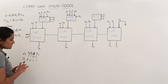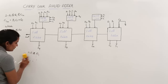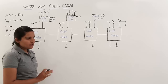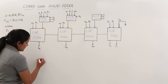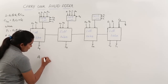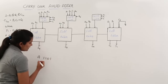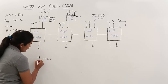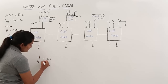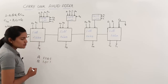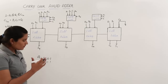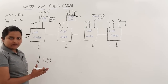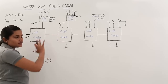Here I am not considering A-naught; if you want to consider you can consider A-naught also. Now my example is: A is the 4-bit number 1101, and B is the 4-bit number 1011. These two I am going to add. Now I am going to place the A values and B values in the circuit diagram.